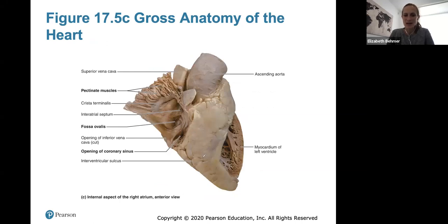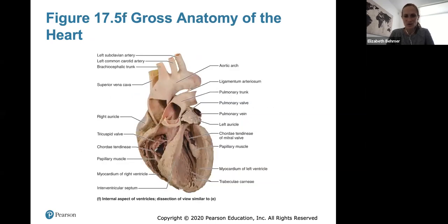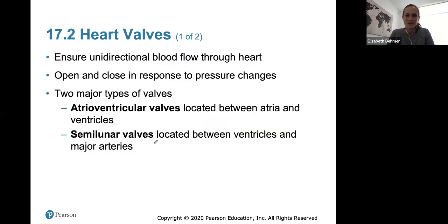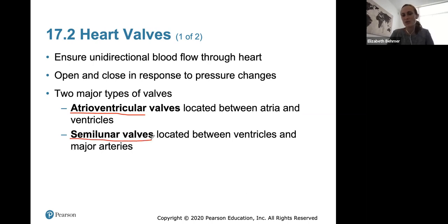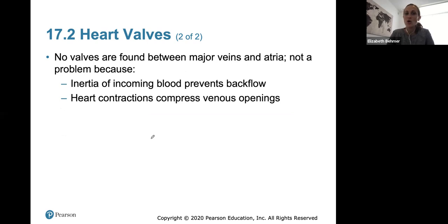Here's an internal aspect of the right atrium and the ventricles. You can see the chordae tendineae attached to the cone-shaped papillary muscles and then to the valves. The four heart valves ensure unidirectional blood flow through the heart, opening and closing in response to pressure changes. There are two atrioventricular (AV) valves between atria and ventricles, and two semilunar valves between ventricles and major arteries. No valves are found between major veins and atria — inertia of incoming blood prevents backflow, and heart contractions compress venous openings.